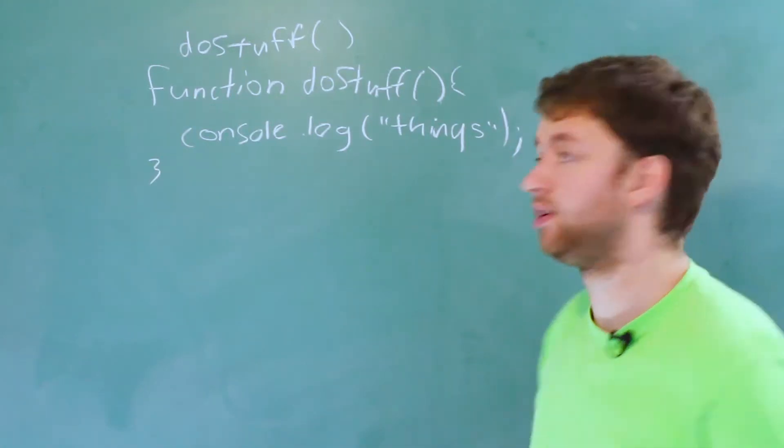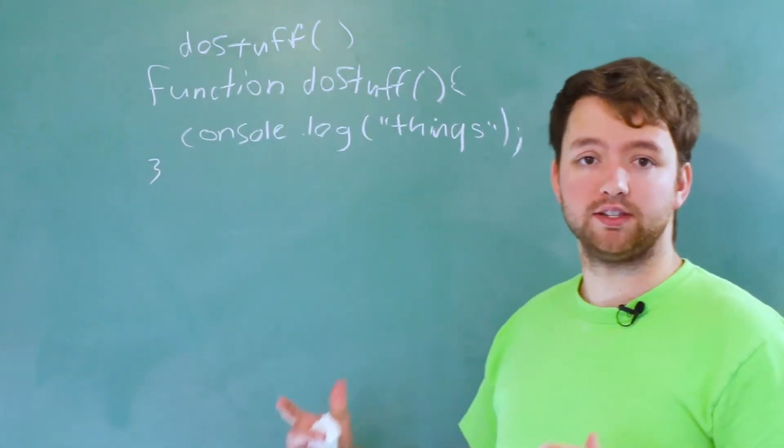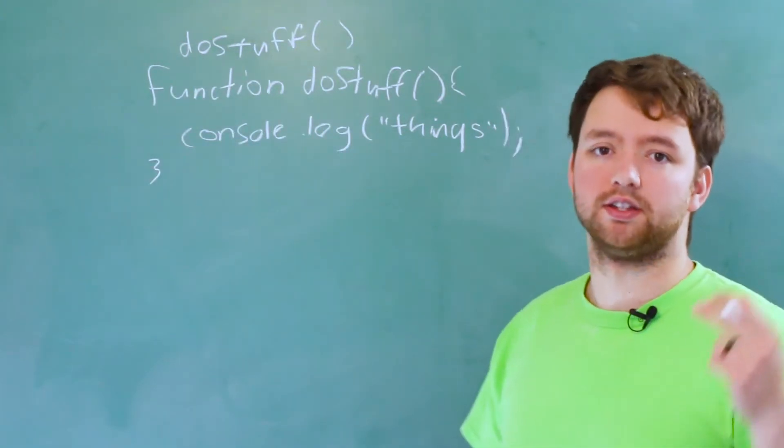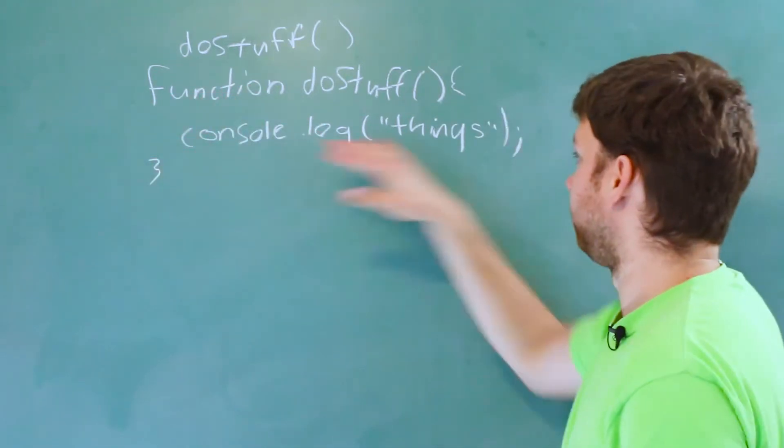That whole thing is hoisted so it's basically declared including this code. Now the second time around, it hits this call. doStuff already exists because it was brought into existence the first time around. So this works and you will get the value things.